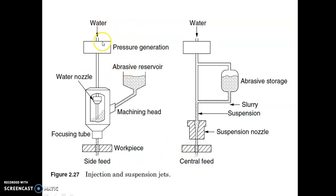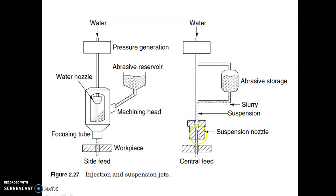We have water coming from the reservoir entering a pressure generation unit and going to a nozzle. This is a mixing chamber where water comes out of a nozzle, and at the exit of the nozzle abrasives are added from a side hopper, then goes out through another nozzle as a high velocity abrasive water jet that cuts the workpiece. In the suspension type system, water is directly allowed into the main nozzle, and at an intermediate tubing some abrasive is added by suspension; that slurry enters the nozzle, creates high velocity, and cuts the workpiece.